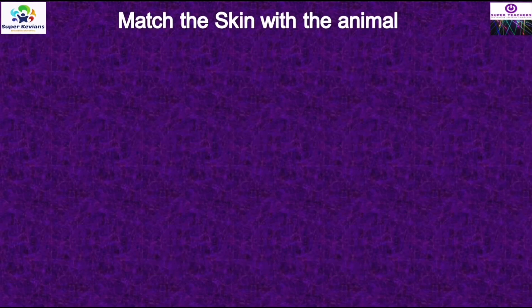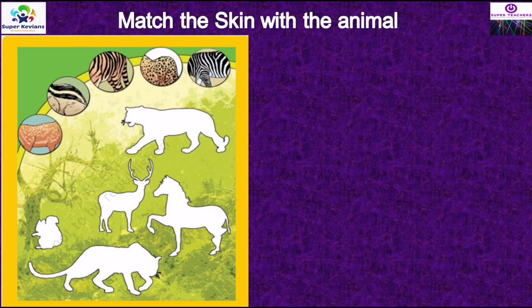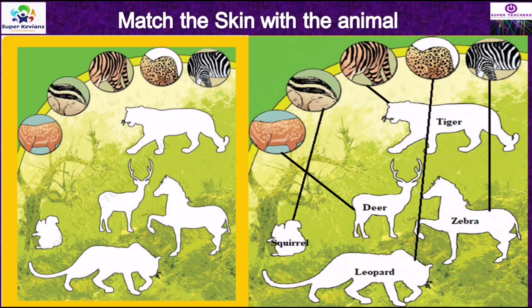Now, match the skin with the animals. You can see the skins of different animals here, and some animals shown in white images. You have to match the skin with the animals. The first one is the skin of the deer, the second one is the squirrel, the third one is the tiger, the fourth one is the skin of a leopard, and the fifth one is the skin of a zebra.